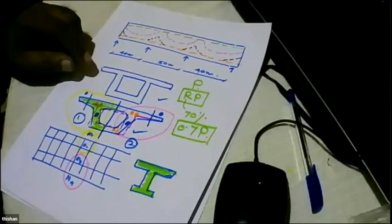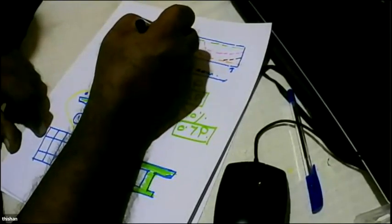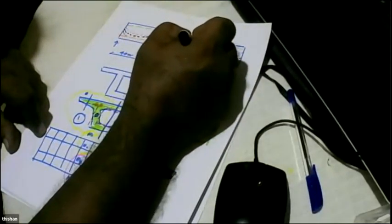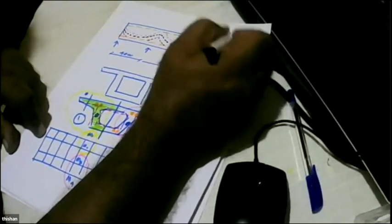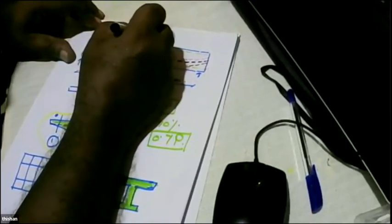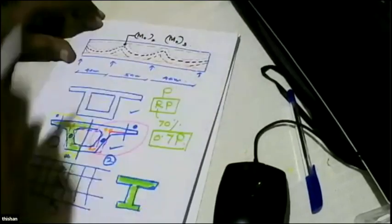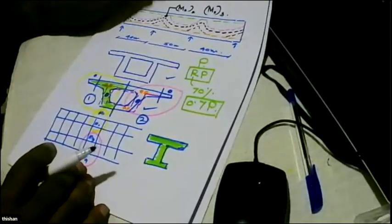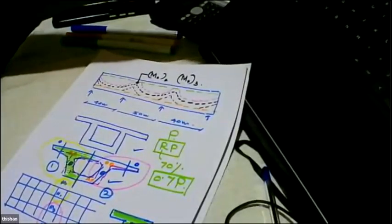Our task is very straightforward: to find a cable profile that fits within these boundaries. This profile will have a special property — it will generate secondary moments that we specify. So the task is to generate the secondary moments M2,2 and M2,3. We need a method that will allow us to find the secondary moments generated when we know the eccentricity profile at each section.